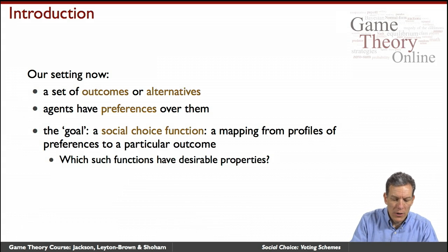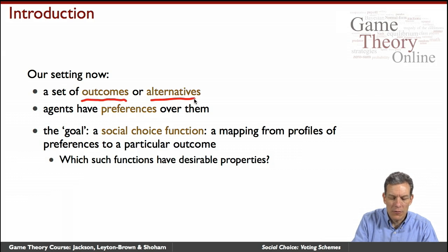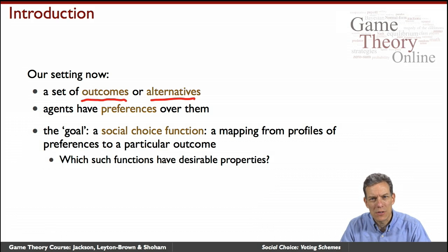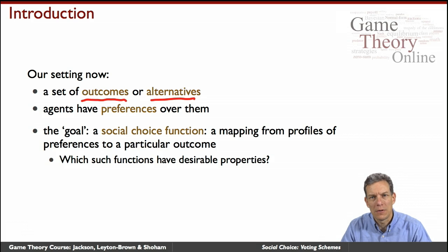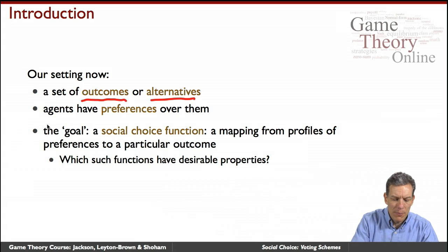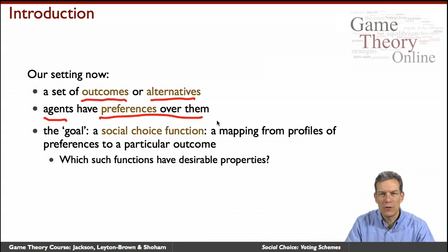We're looking at a setting where we have a set of outcomes or alternatives — something we're going to choose over. So it could be a set of political candidates, choosing new members for a society, or deciding on a new tax rate for government. There are a whole series of different questions and possible outcomes, and the people — the voters, the agents — have preferences over these outcomes.